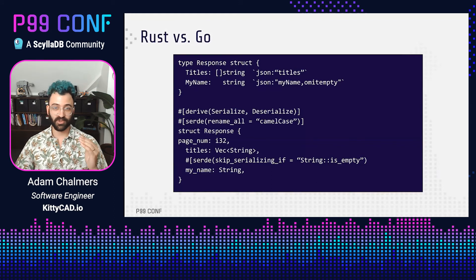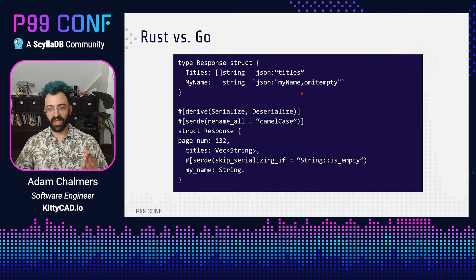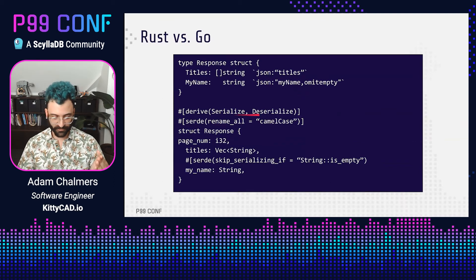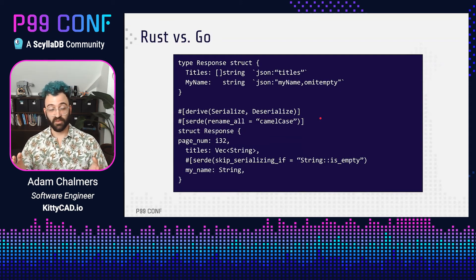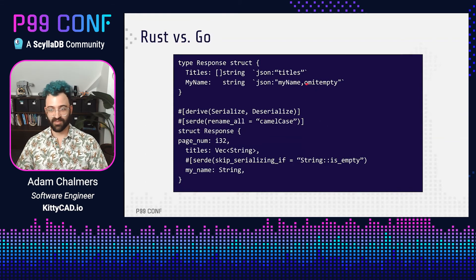In Rust we can use Serde, which provides macros to automatically annotate all your fields with code generation so you don't have to manually write typo-prone code. Here's an example: the top struct is in Go and the bottom struct is in Rust. The Go struct can be converted to and from JSON, but you have to manually write each field's corresponding JSON field name in camel case. On the other hand, the Rust code uses Serde to automatically rename every field with camel case instead. This really reduces the chance of writing a typo, which reduces the amount of unit tests you have to write and saves you time, making you more productive.